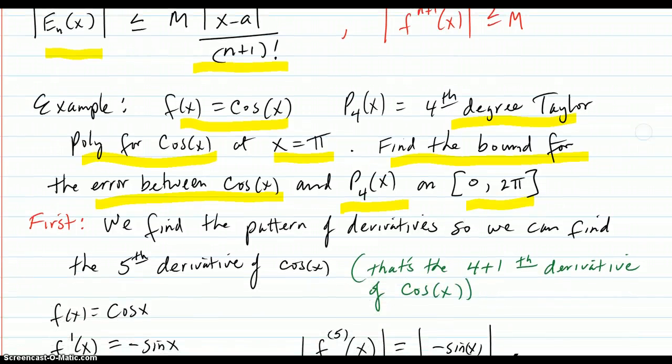First we find the pattern of derivatives so we can find the fifth derivative of cosine. We might not need a pattern because we can just find the fifth derivative of cosine, but what if the derivatives were real wild and blowing up? We would need some kind of pattern so we could write down the fifth derivative or the seventh or whatever was asked for.